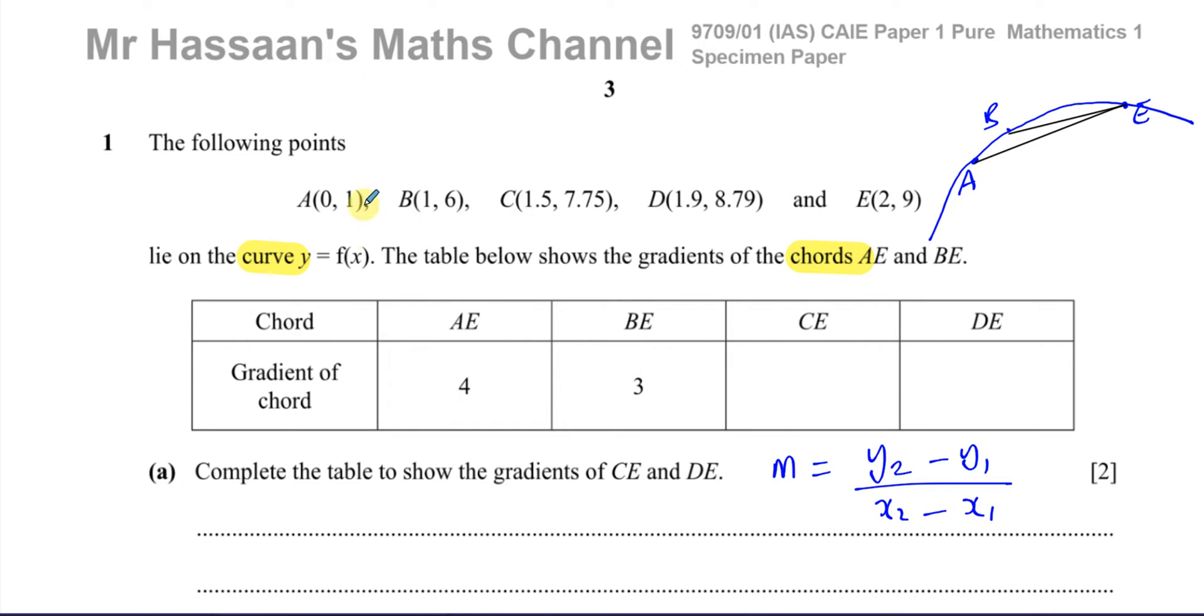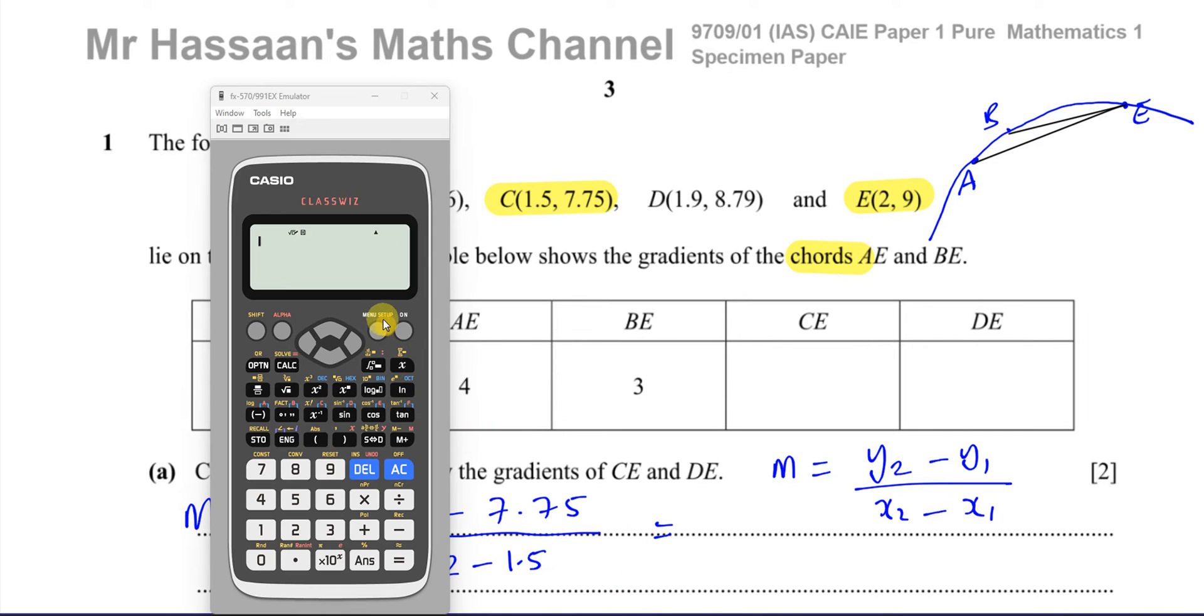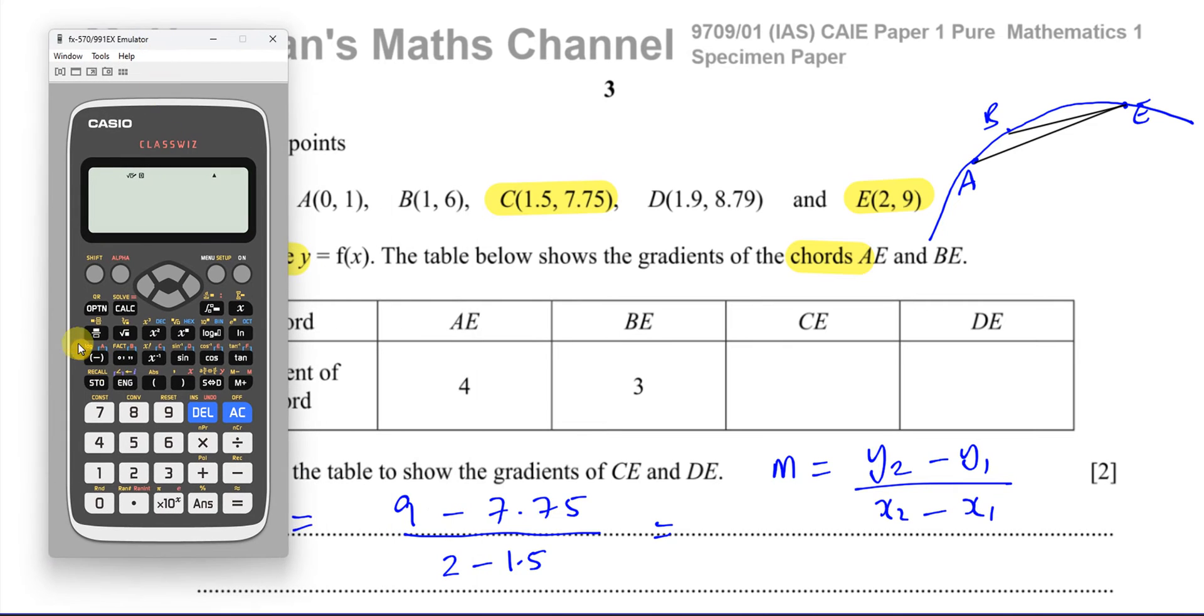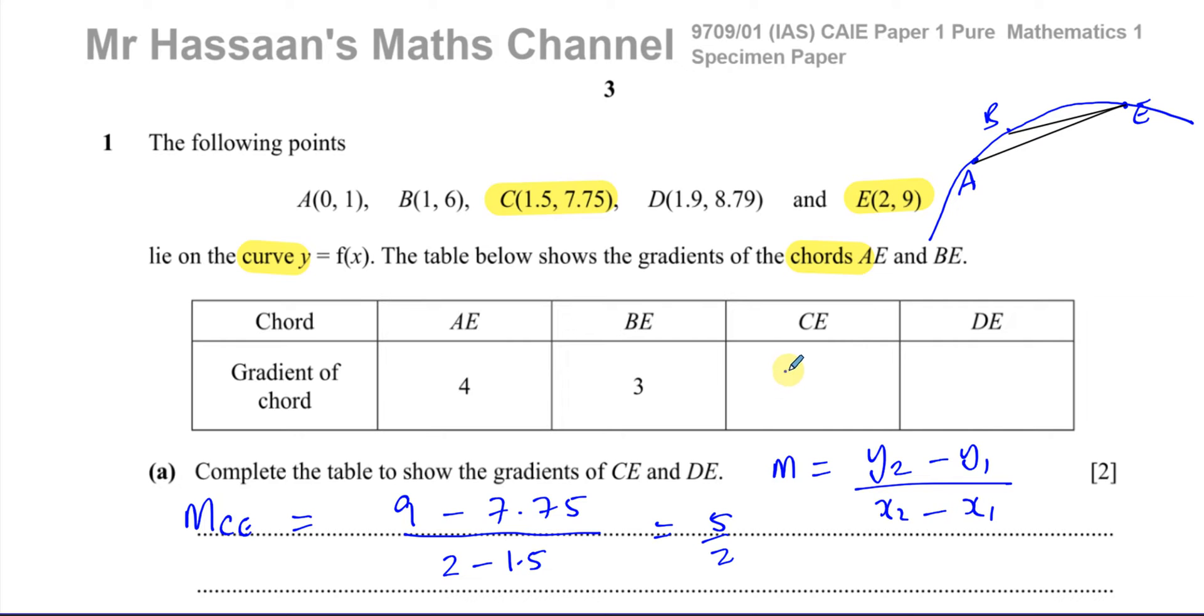If we're considering CE, the gradient of CE, we've got to think about C and E. So I've got to now do the change in Y, which is going to be 9 minus 7.75 over 2 minus 1.5. We can just stick that straight in the calculator. You have 9 minus 7.75 divided by 2 minus 1.5. That gives you 5 over 2, which is the same as 2.5. That's 2.5.